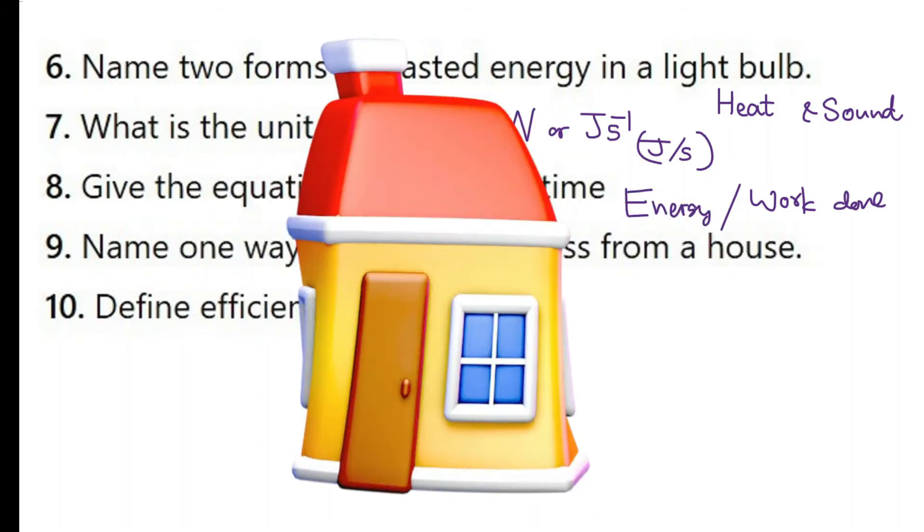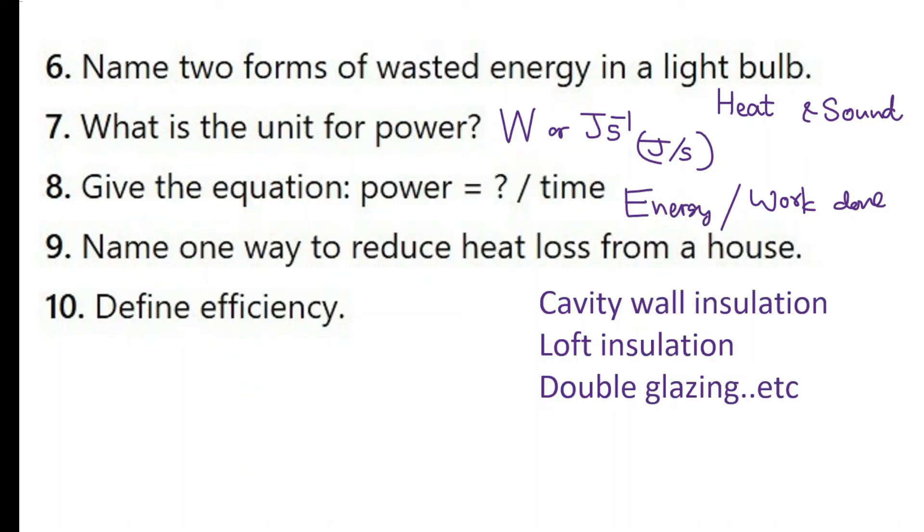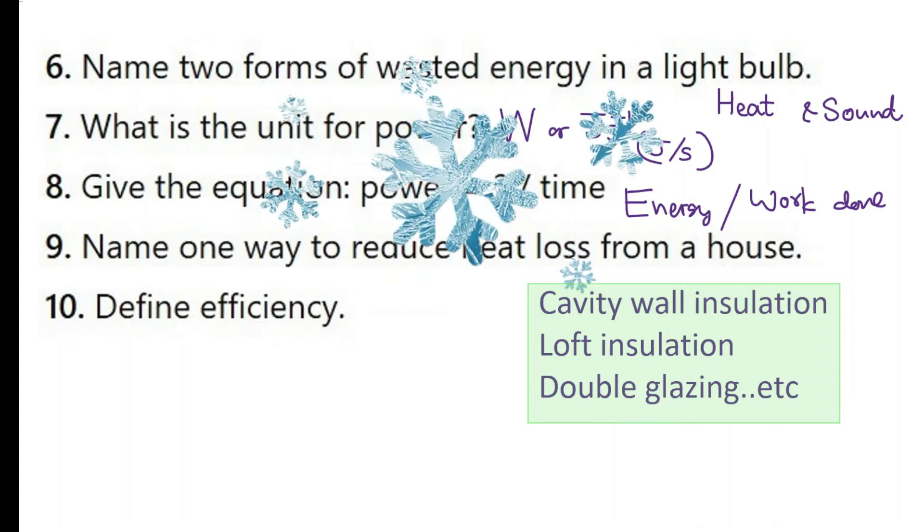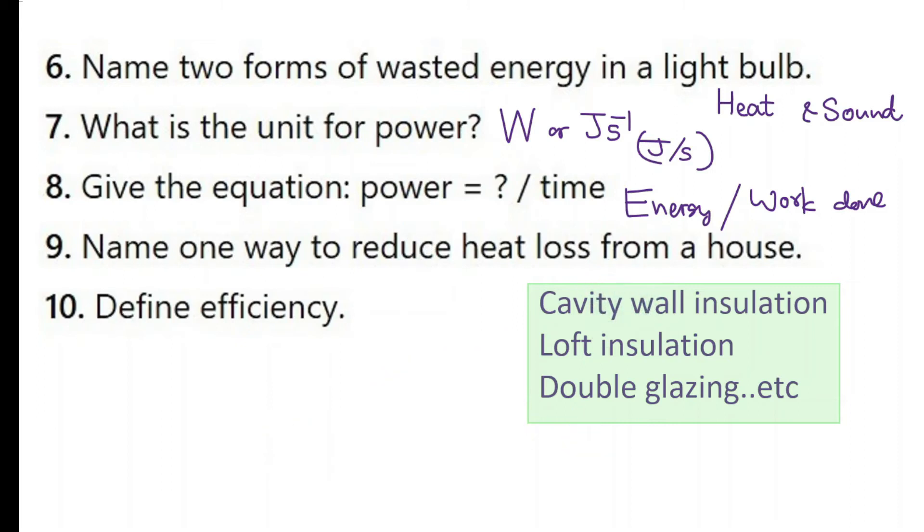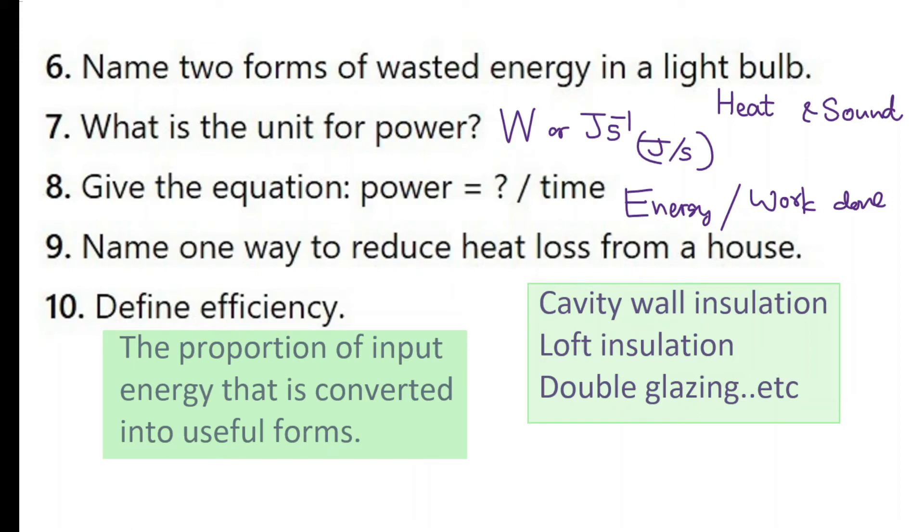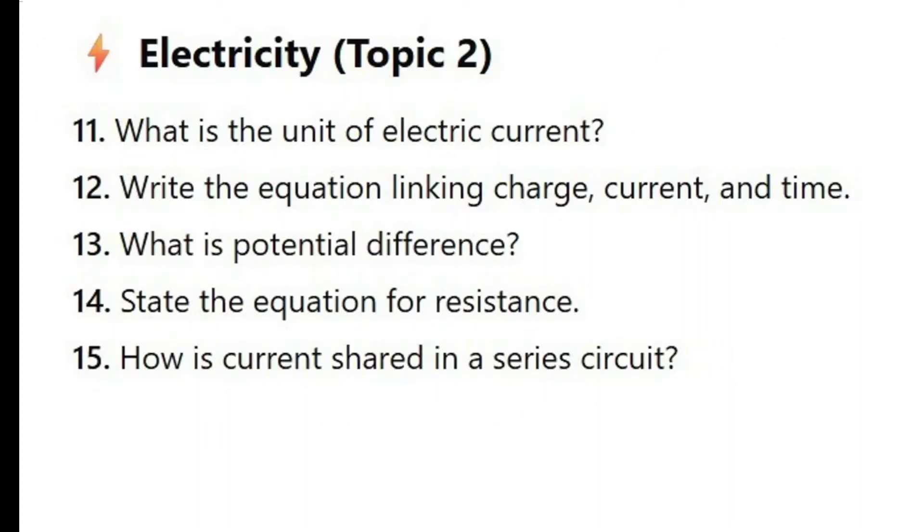Name one way to reduce heat loss from a house. There are multiple ways you can write here: cavity wall insulation, loft insulation, double glazing, carpets with an underlay, draft excluders, thick curtains. So many things. Define efficiency. We can define efficiency as the proportion of input energy that is converted into useful forms. You can also write the formula. So if you write efficiency is equal to useful energy output divided by total energy input, you get full marks for this.